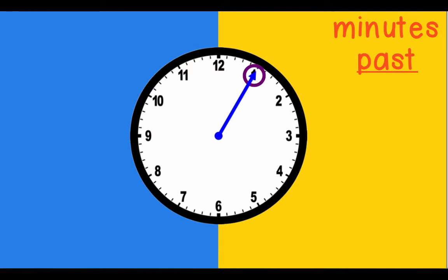When our long hand is pointing to the one, or our minute hand is pointing to the one, it's not actually representing one minute past an hour. This one actually represents five minutes because from our twelve to our one, we have ticked past one, two, three, four, five minutes. And it's past because we're on our past side of the clock.